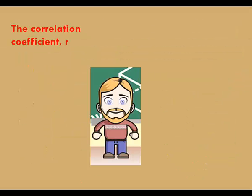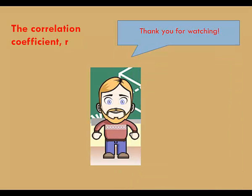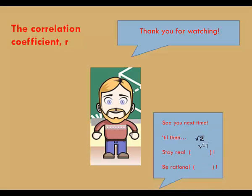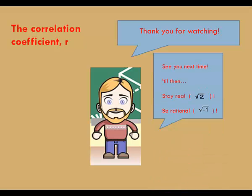In this video, we learned about the correlation coefficient R, which is a measure of the direction and strength of a linear association. Thanks for watching, and have a great day. Until next time, stay real and be rational.